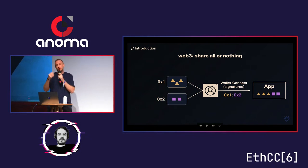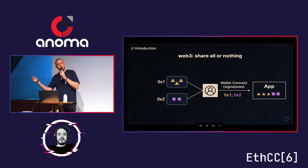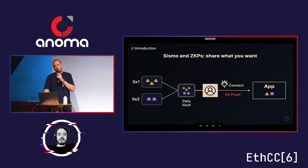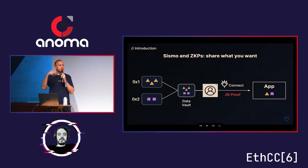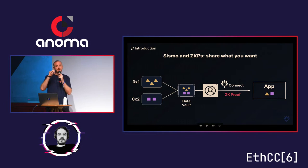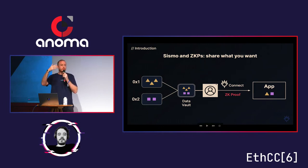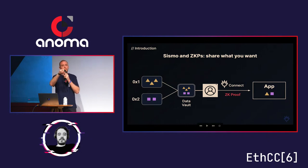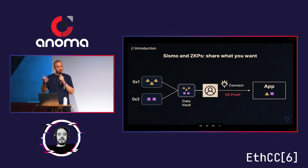We've recreated the same silos — one wallet per use case. With Sysmo, what we allow you to do is use a data vault, an identity aggregator, and with ZK proofs, pick exactly what you want from your aggregated data. You can selectively reveal to an application: I want to pick this from that wallet, reveal this from that wallet. That's what we're trying to do at Sysmo and make it available for all devs.